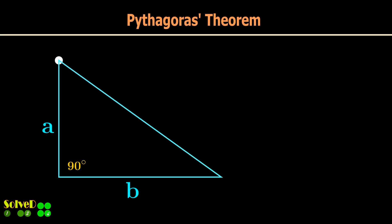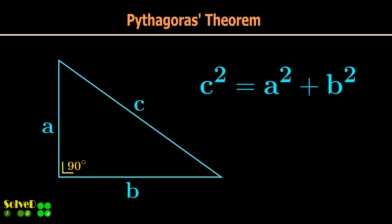According to the Pythagorean theorem, the sides of a right-angled triangle are related by this equation. Note that the side C is opposite to the right angle.